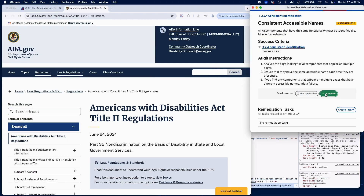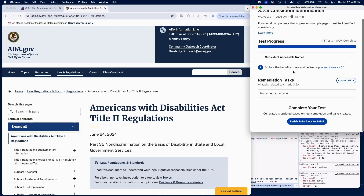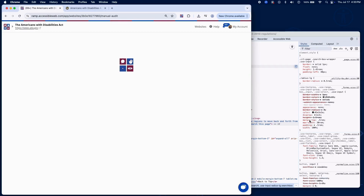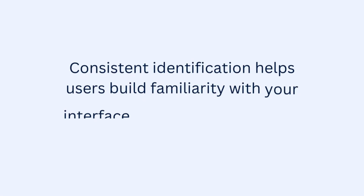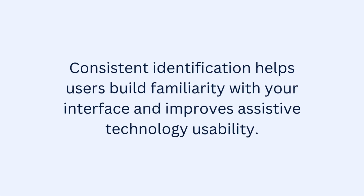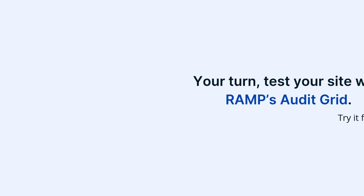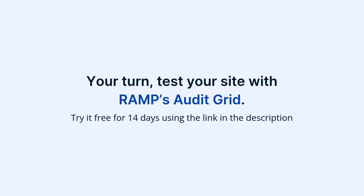That completes testing for Success Criterion 3.2.4 using RAMP's Audit Grid and Chrome extension. Consistent identification helps users build familiarity with your interface and improves assistive technology usability. Now it's your turn — test your site with RAMP's Audit Grid. Try it free for 14 days using the link in the description.